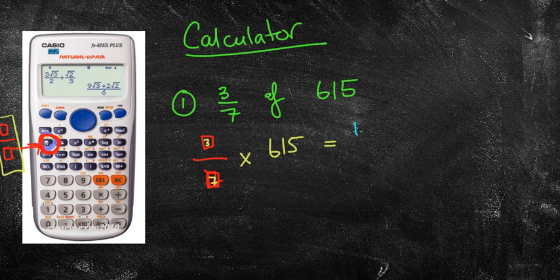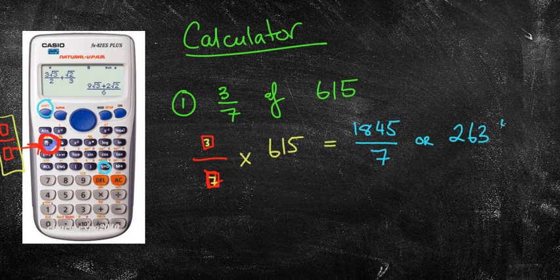Now your answer might come up as one of these numbers. It could come up as 1845 over 7. Now currently that is an improper fraction. If you want to put that as a mixed numeral, what you can then do is see this shift key and this SD key. Above it, you might be able to see that it actually has mixed numeral in yellow. So if you press your shift and then press the SD key, it actually rewrites it for you as 263 and 4 sevenths. Much easier than having to do it the long way by hand.